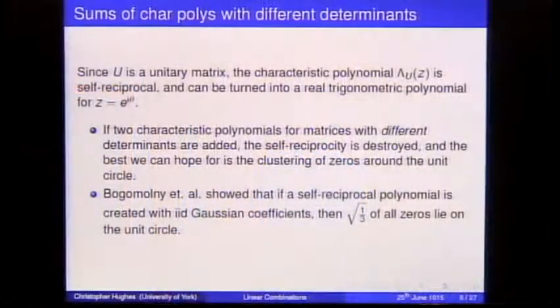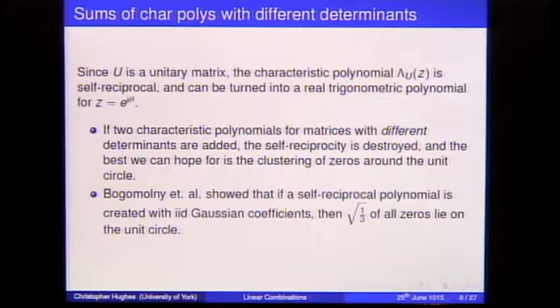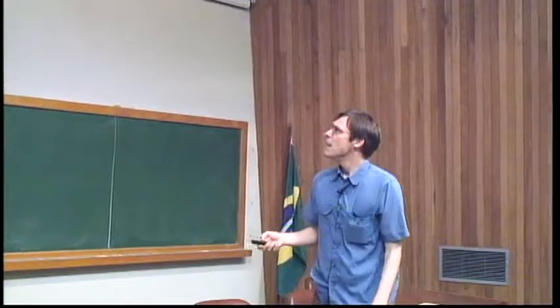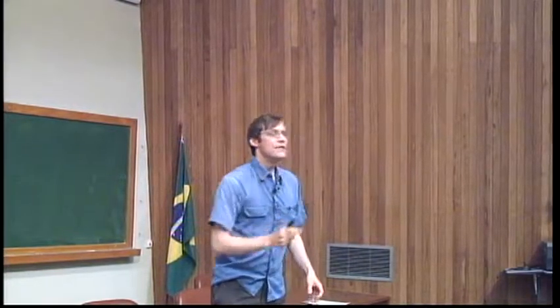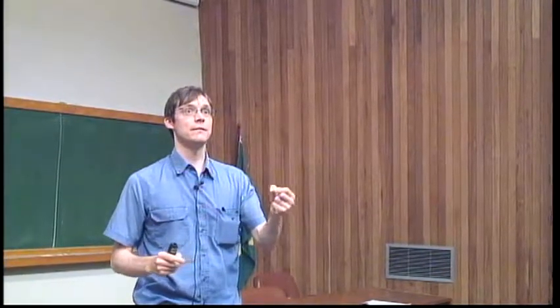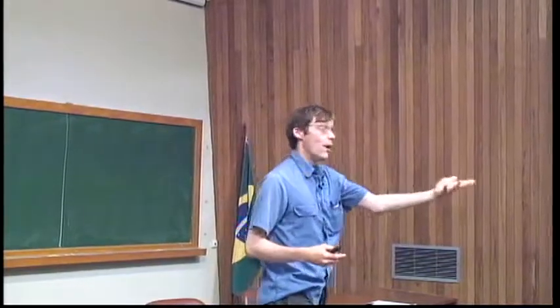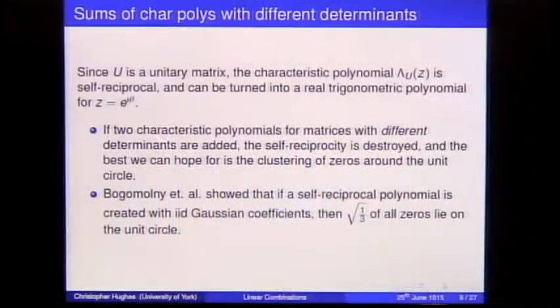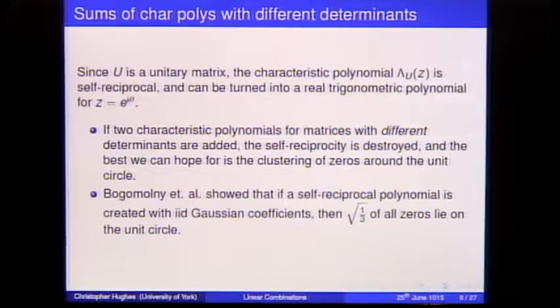My method of proof is very similar to Bombieri and Hejhal's. For context: a characteristic polynomial of a unitary matrix is a self-inversive polynomial, which can be turned into a real trigonometric polynomial after a change of variables. If you add two characteristic polynomials without the same determinant, self-inversiveness is destroyed, so you don't get a real trigonometric polynomial, and zeros won't lie on the unit circle — they'll cluster around it, but not lie on it.